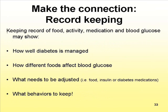We need to make the connection by doing record keeping. Keeping a record of food, activity, medication, and blood glucose may show how well diabetes is managed and how different foods affect blood glucose. It also shows what needs to be adjusted — is it the food, insulin, or other diabetes medication? It also shows what behaviors to keep. If you eat a meal and you're not sure how it affected your blood glucose, just check your sugars two hours after that meal. If your sugars are high, there's too much carbohydrate; if they're low, there wasn't enough carbohydrate in that meal.